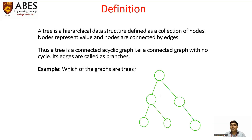It means if a tree has a cycle, then we will not call it a tree — we will call it a graph. So if I connect an edge between these two vertices, we will call it a graph, not a tree. Simply put, if a tree has a cycle then we call it a graph; otherwise, it is a tree.